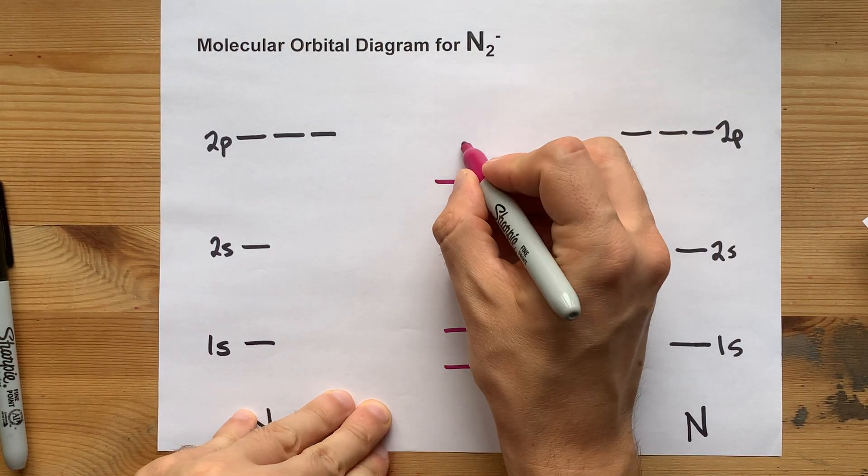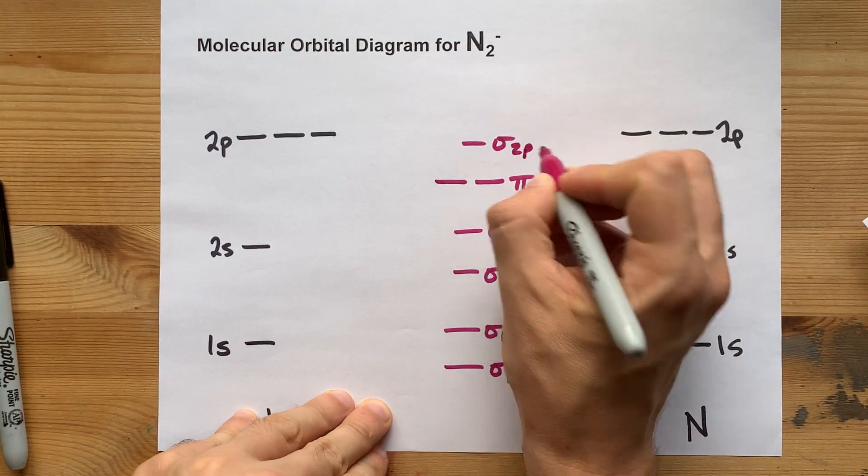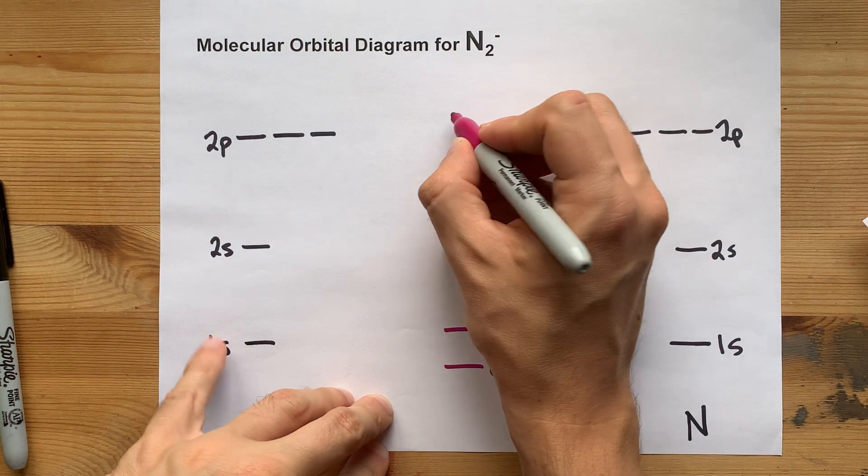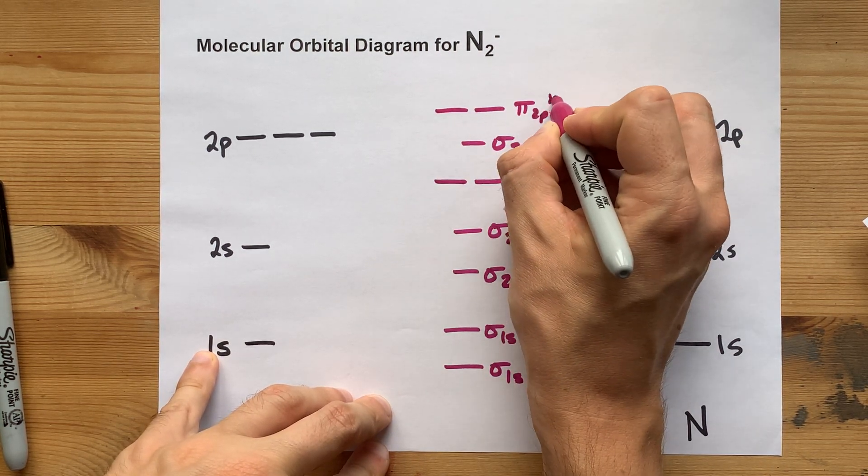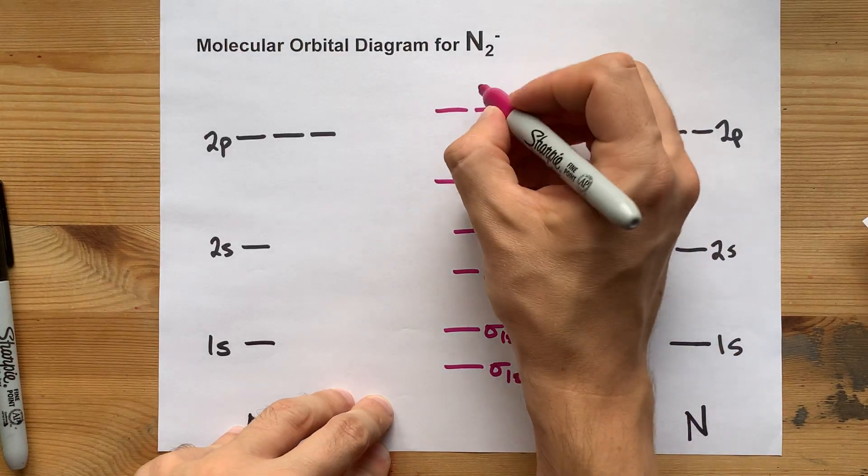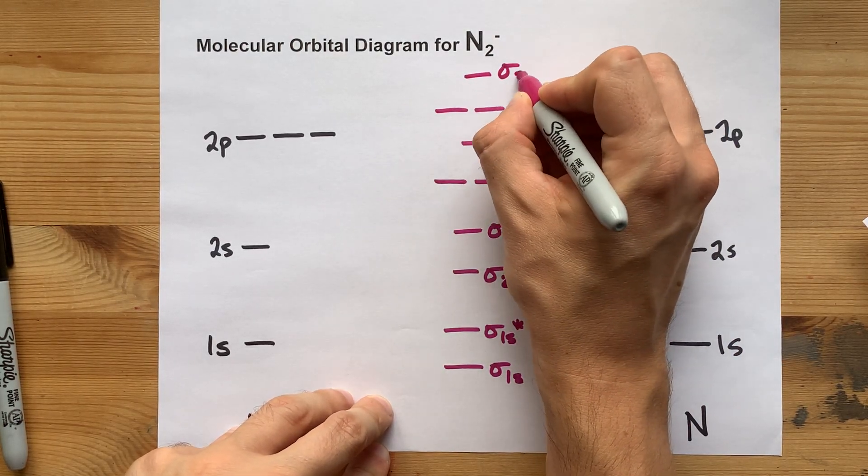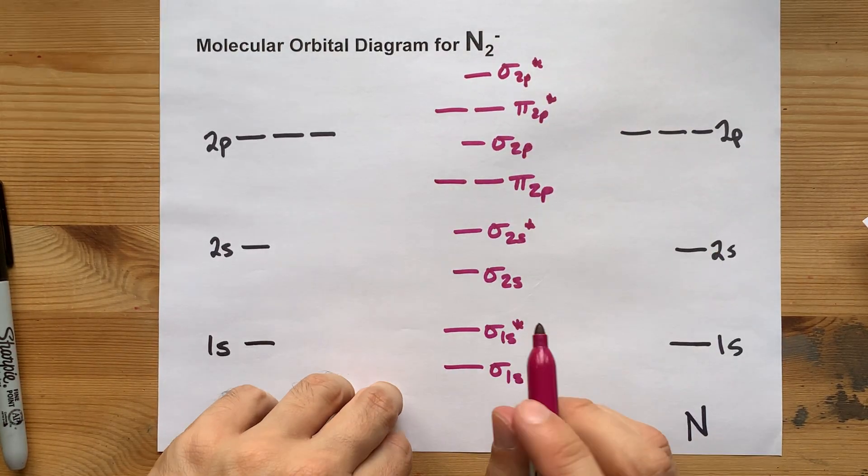Next lowest is the sigma 2p bonding orbital, then the pi 2p antibonding orbitals, then the sigma 2p antibonding orbitals.